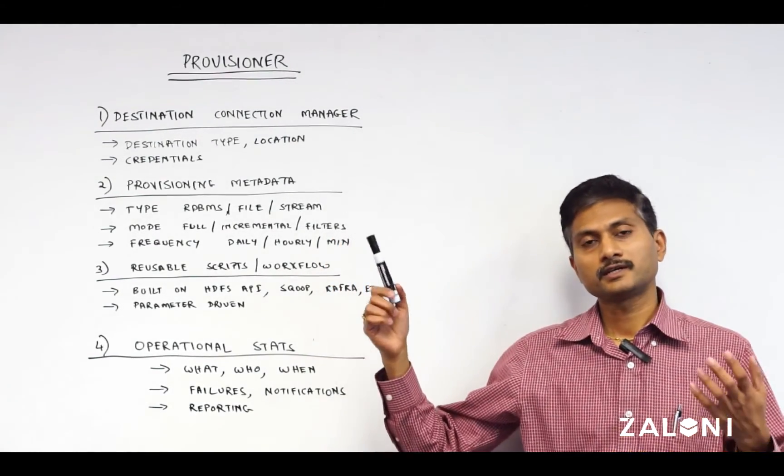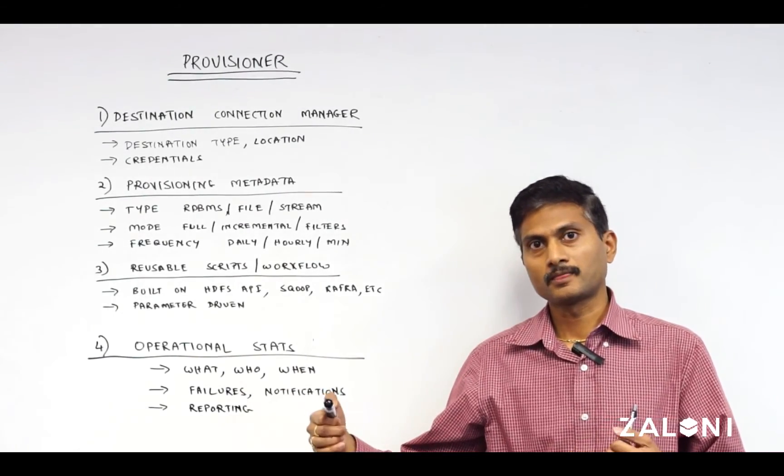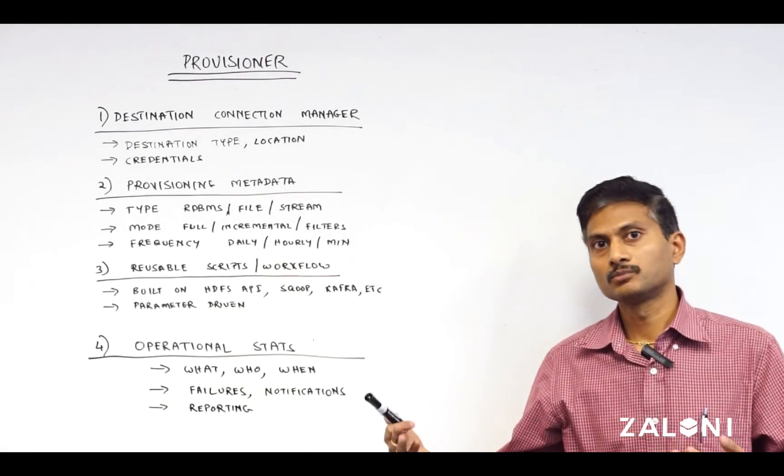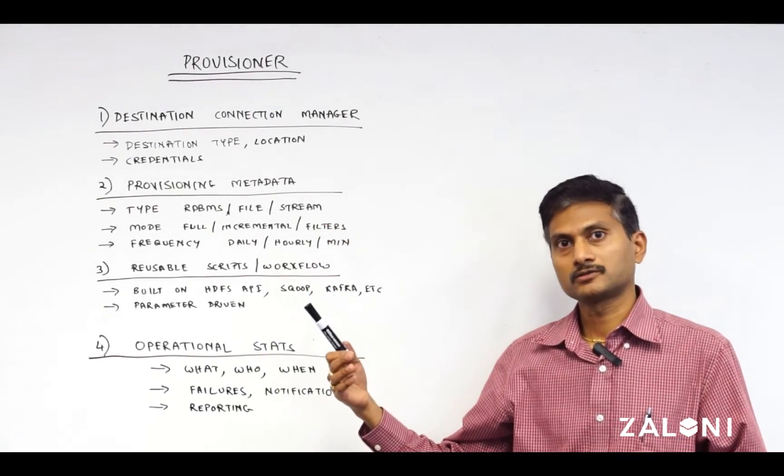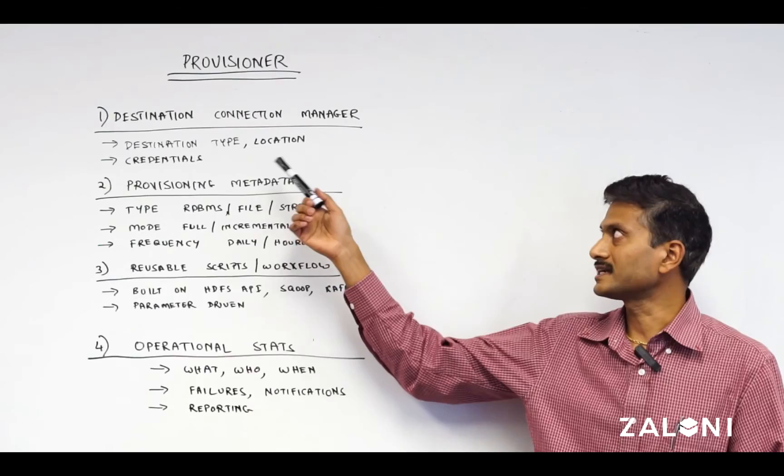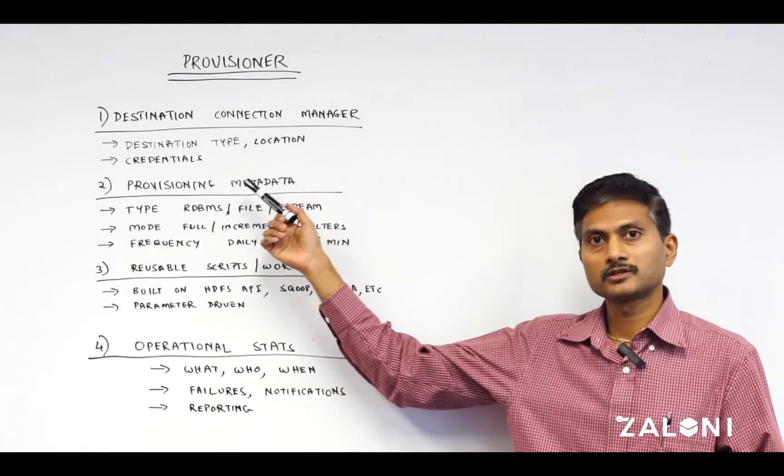The Provisioner component extracts the data from the data lake to the various consumers. So let's look at what's required to build that. First, you need a destination connection manager. Where is the data going? What type of destination type it is, the location, what are the credentials?